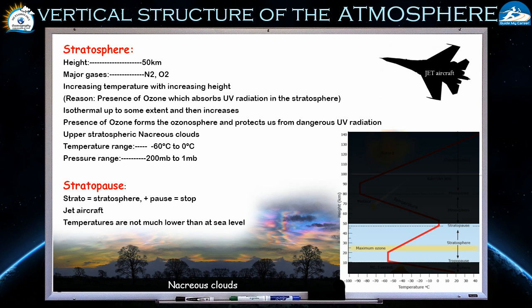Isothermal means the same temperature — 'iso' means same, 'thermal' means temperature. From the start of the stratosphere the temperature profile follows an isothermal process up to some extent, and then starts increasing with increasing height, as you can see clearly in this slide. Because of the presence of ozone in this layer, we can also call it the ozone sphere.